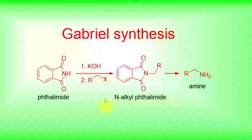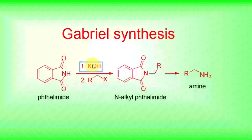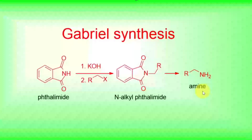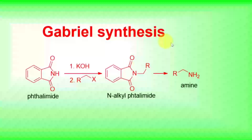In Gabriel synthesis, phthalimide reacts with KOH, then reacts with an alkyl halide to form N-alkylphthalimide. This then reacts with appropriate reagents to give an amine. Gabriel synthesis is the synthesis of amines from alkyl halides using phthalimide.